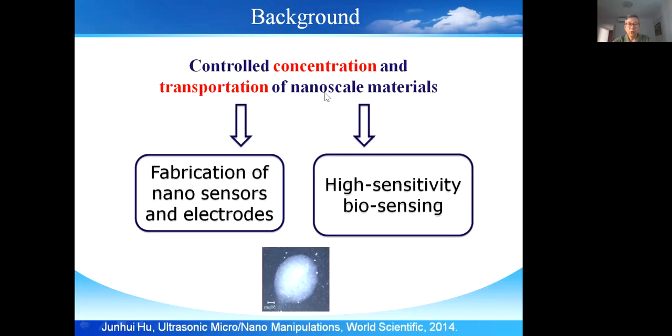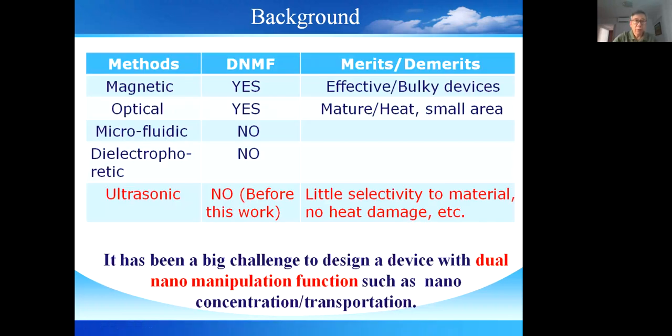Controlled concentration and transportation of nanoscale materials has lots of applications, such as in fabrication of nanosensors and electrodes, and in high-sensitivity biosensing. We may use magnetic, optical, microfluidic, electrophoretic, and ultrasonic methods to implement controlled concentration and transportation.